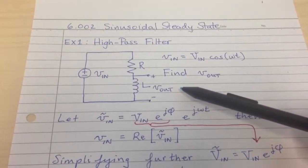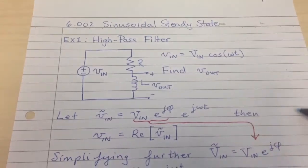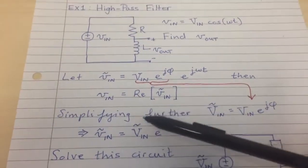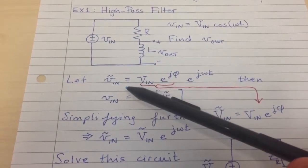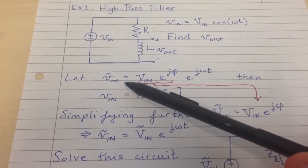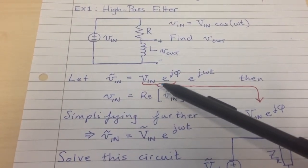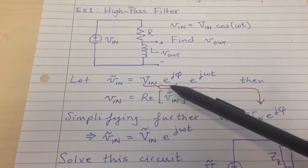That amplitude will, in general, depend on the frequency. To approach this problem, it helps to define some new variables. The first will be something we call V_in tilde, which will basically be a complex version of our V_in.